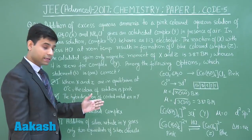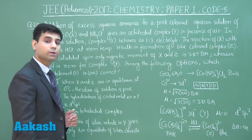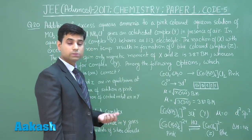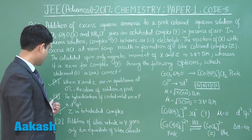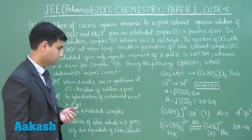Statement D: Addition of silver nitrate in Y gives only 2 equivalents of silver chloride. This is a wrong statement. The correct answers for question number 20 are options A, B, and C. Let's move to the next question.